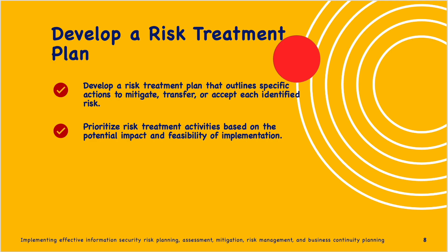Now develop a risk treatment plan that outlines specific actions to mitigate, transfer, or accept each identified risk. Prioritize risk treatment activities based on potential impact and feasibility of implementation. This plan is a critical step in the risk management process — the goal is to identify and implement strategies to mitigate, transfer, or accept risks based on their significance and the organization's risk appetite.